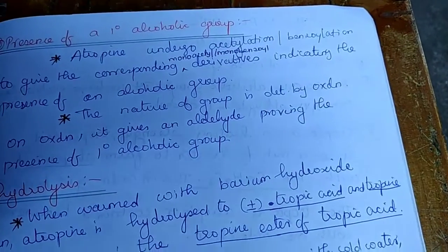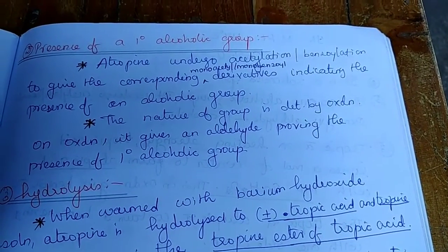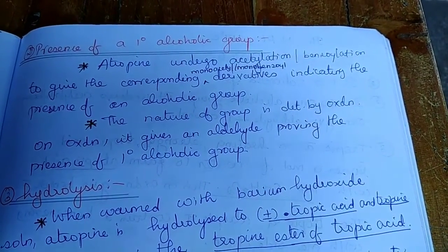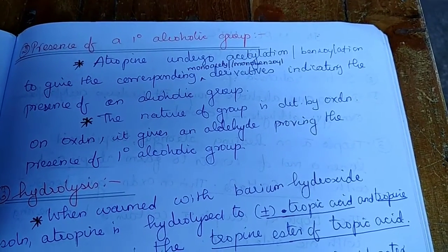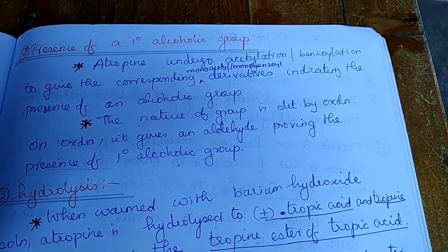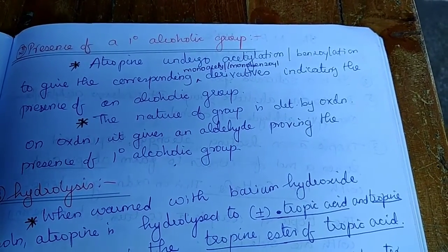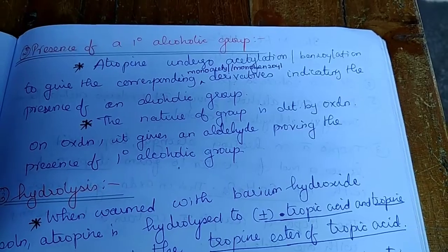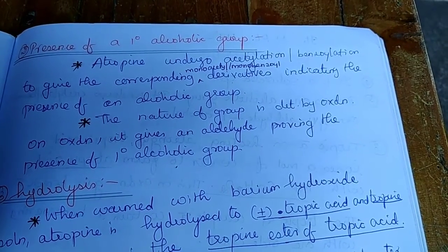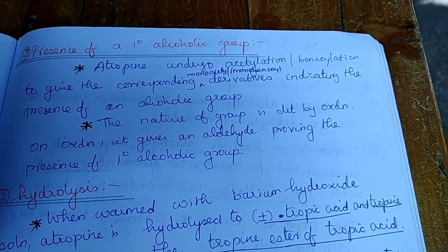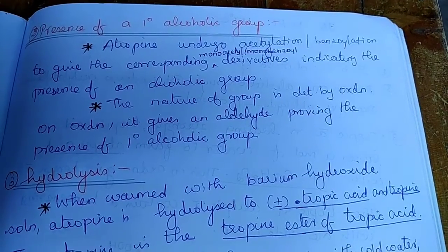The second point is presence of a primary alcoholic group. From the usual tests, acetylation or benzoylation, we get monoacetyl or monobenzoyl derivative. So we can say there is an alcoholic group in atropine and the nature of the group is determined by oxidation and it is a primary alcoholic group.